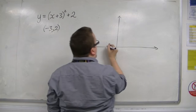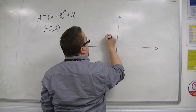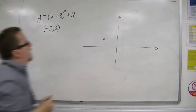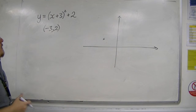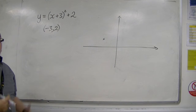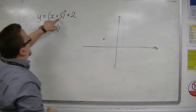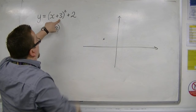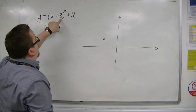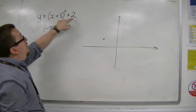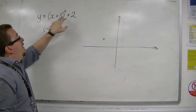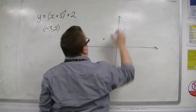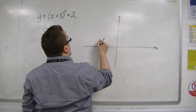So the vertex is at minus 3, 2 — somewhere around about here. I can also find where it crosses the y-axis by expanding and working out the constant term. So 3 squared plus 2 — 9 plus 2 is 11. So it crosses through 11 on the y-axis.